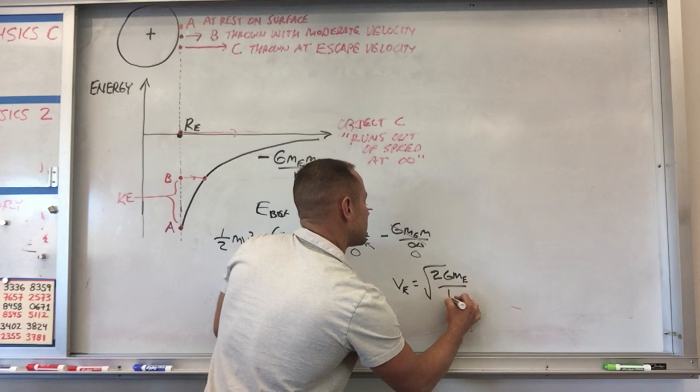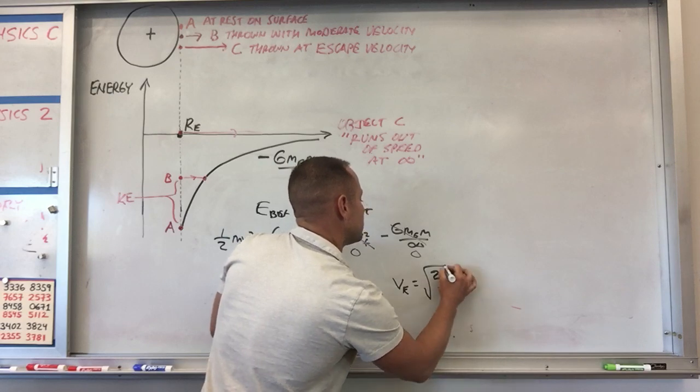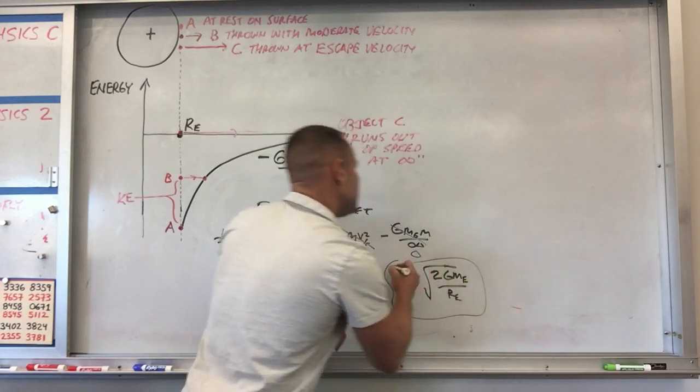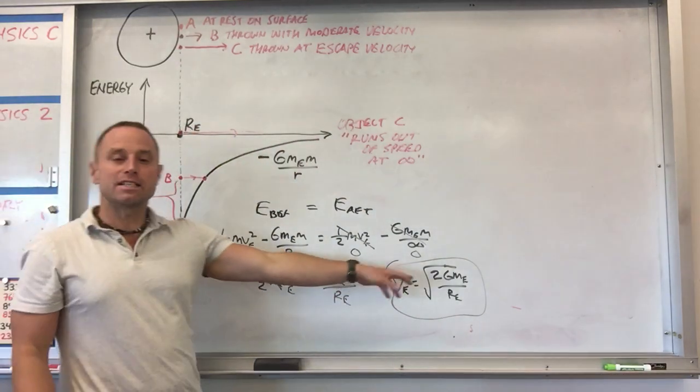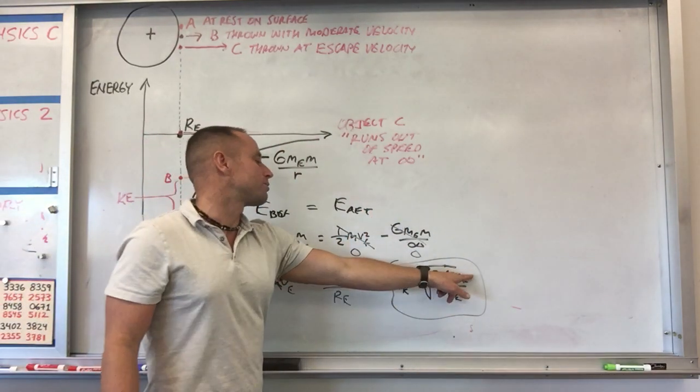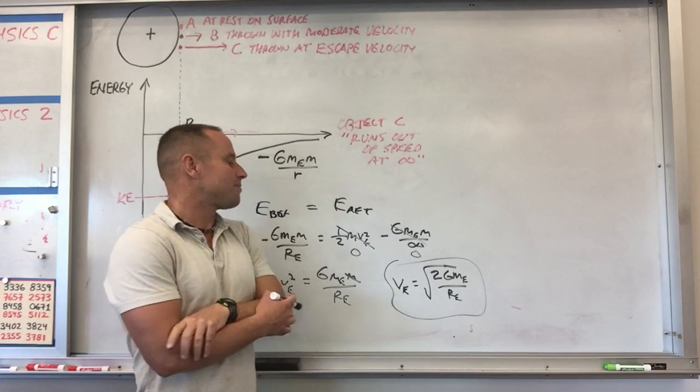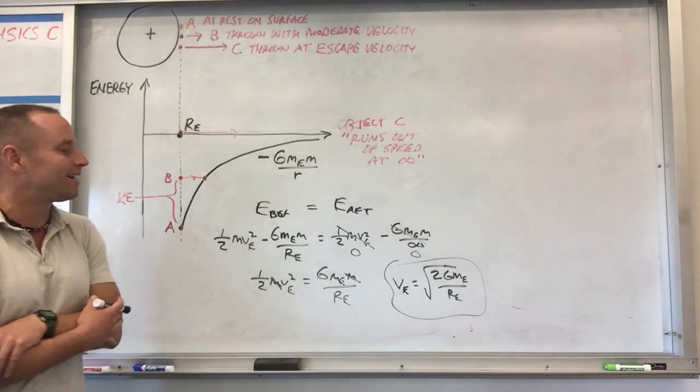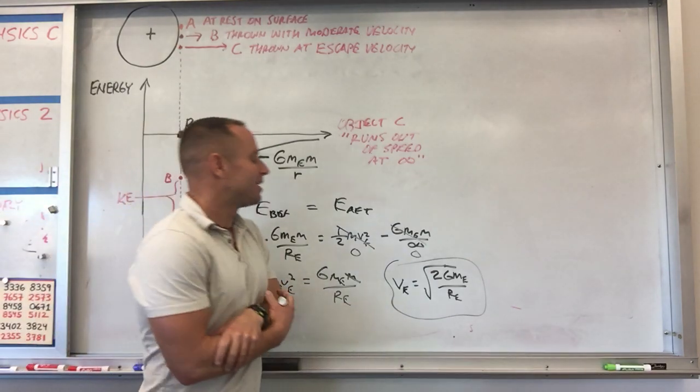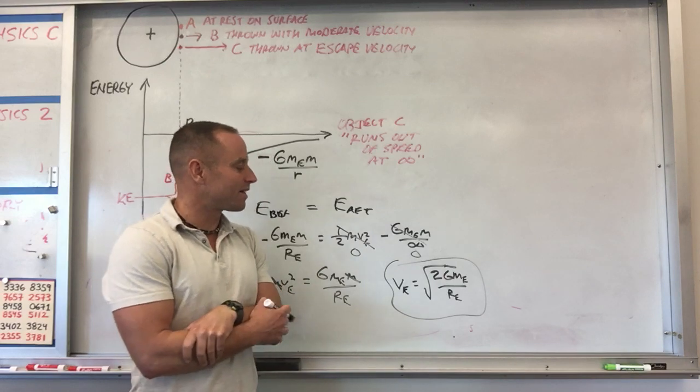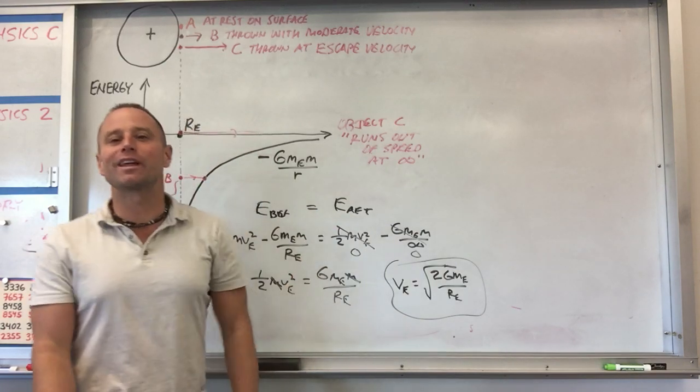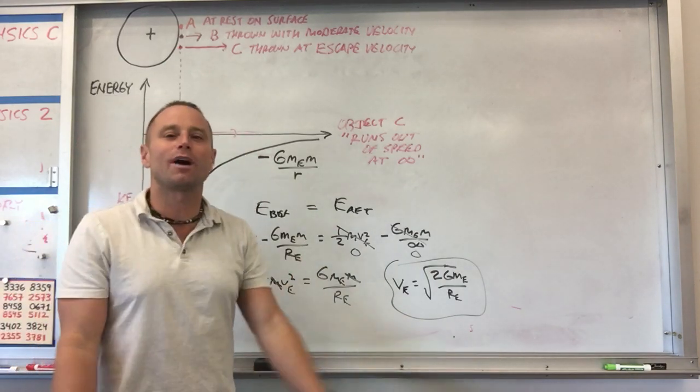So by the way, looking at what this depends on for the escape velocity, notice there's a particular escape velocity for the Earth because the Earth has its own particular mass and radius. If you get to like an object like a little asteroid, you can get these funny situations where the escape velocity is only like a couple meters per second or something, you can just jump off the thing.